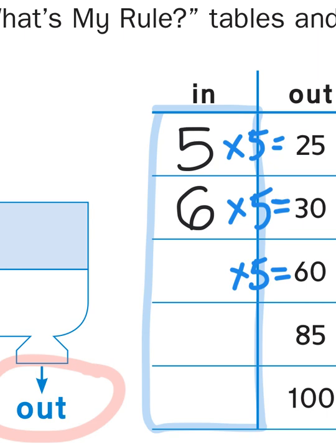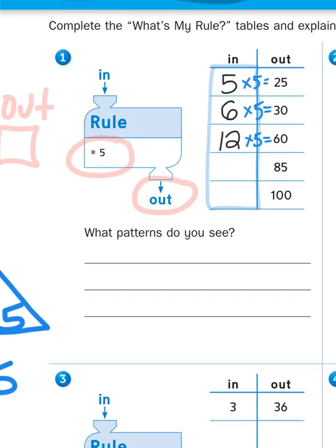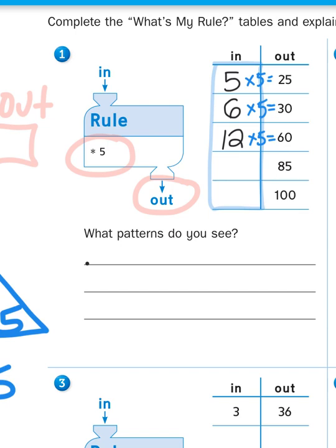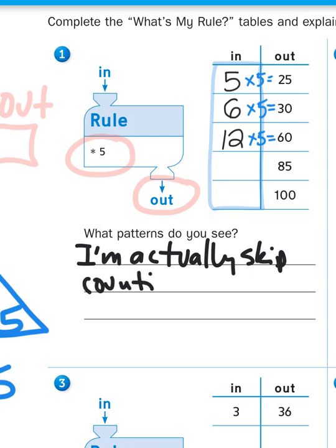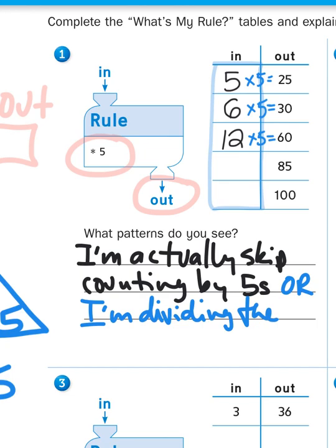And if I skip count by 5s to get to 60, 5, 10, 15, 20, well you can do it in your head, I'm going to get 12 groups of 5. That's how I do this. So what pattern do I see? I could say I'm actually skip counting by 5s, or I'm dividing the output by 5. Either one of those answers would be acceptable.